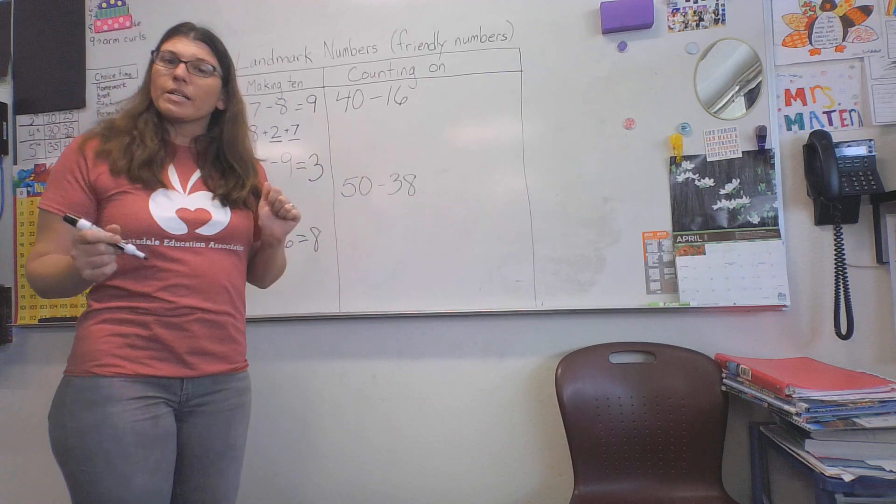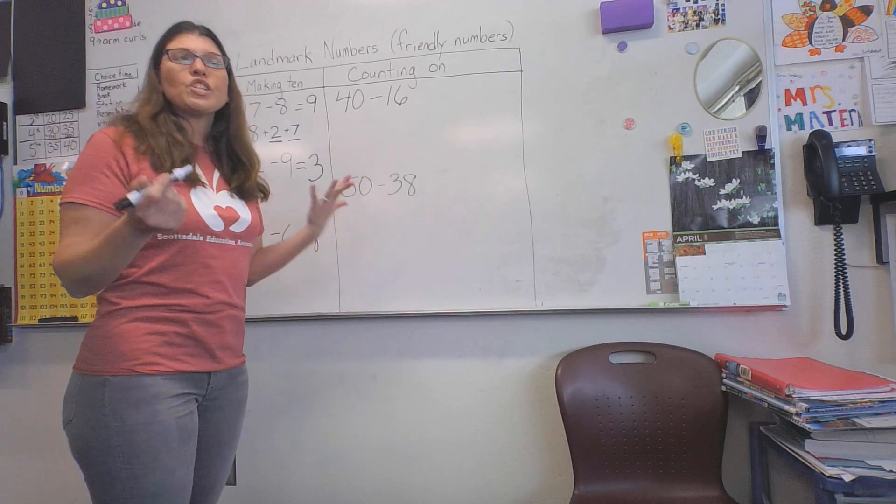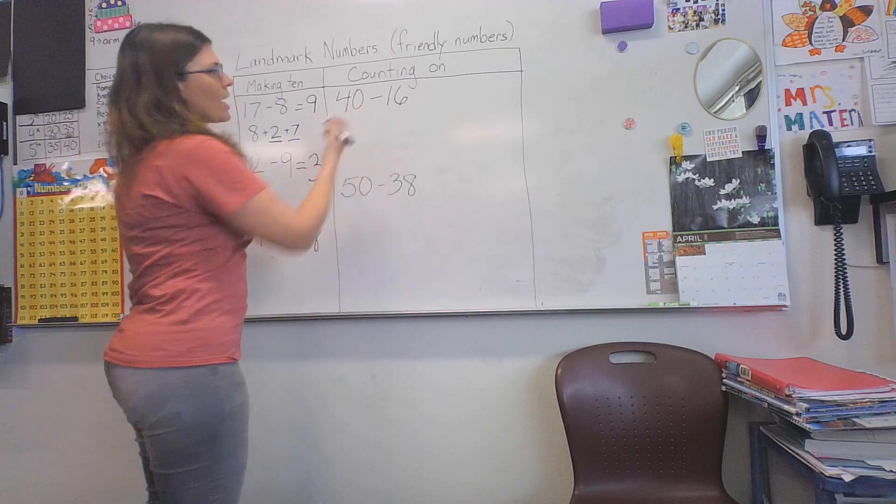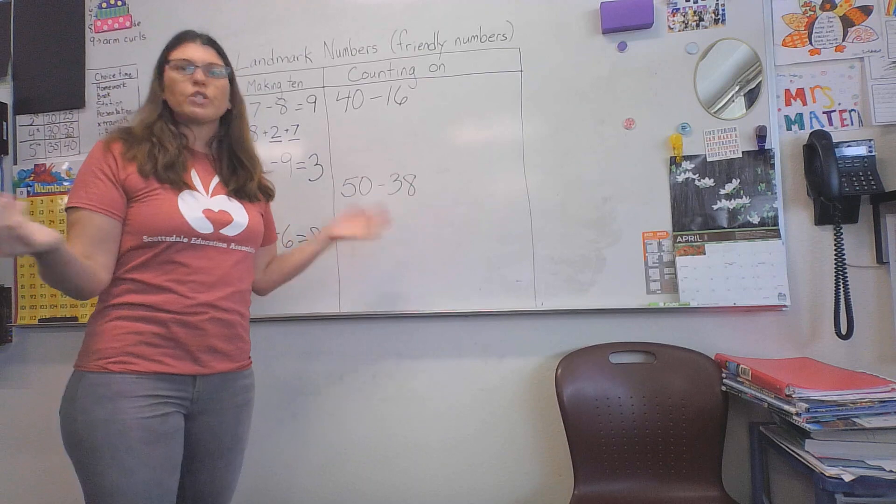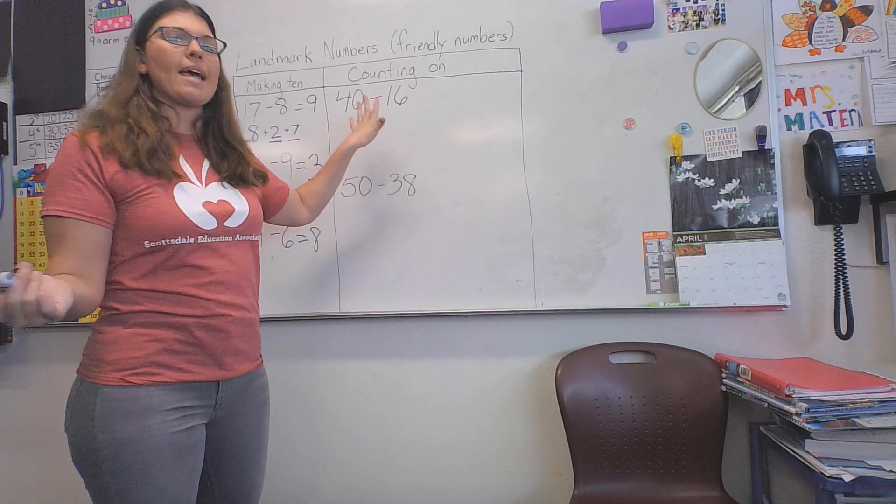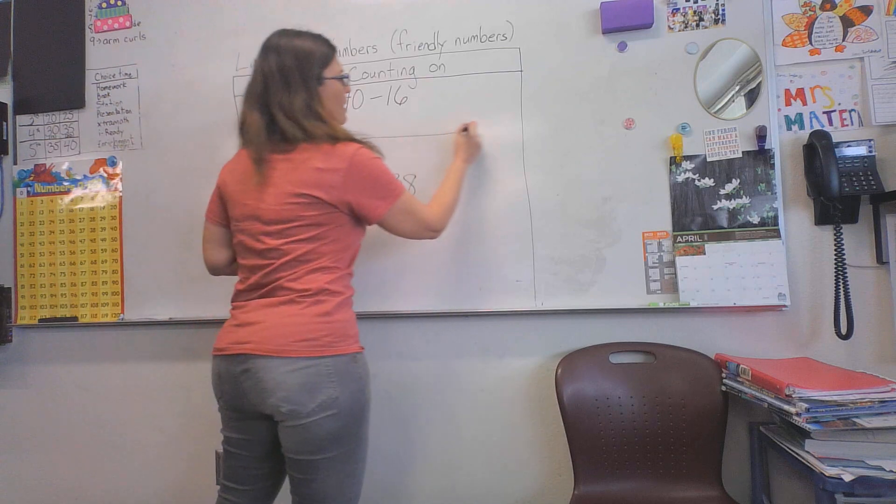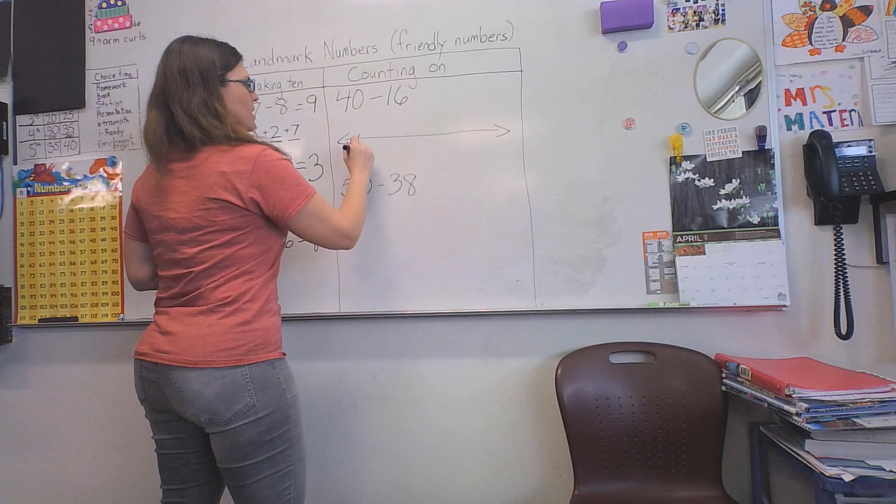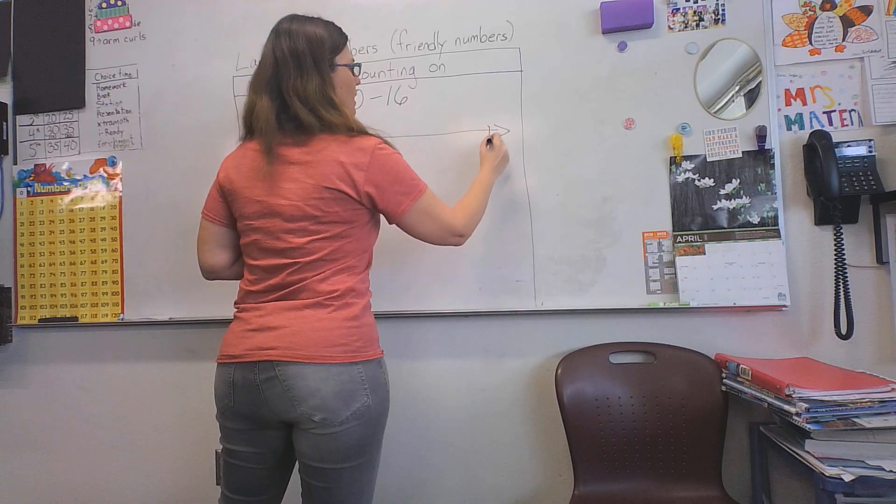I'm going to model this with a number line, which is a good strategy. Some students get to the point where they can do this in their head, but remember, with subtraction we're finding the difference between two numbers. So we're finding how much is between 16 and 40. We create a number line, starting at 16, and we need to get to 40.